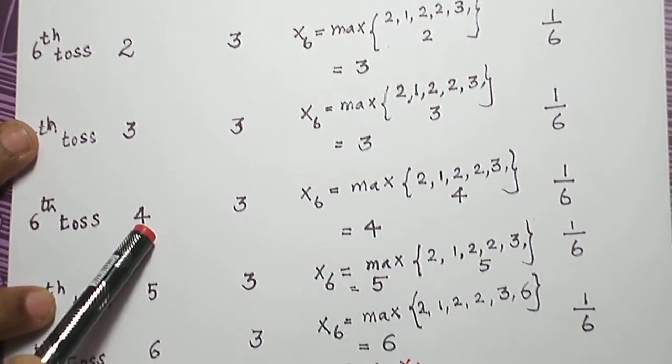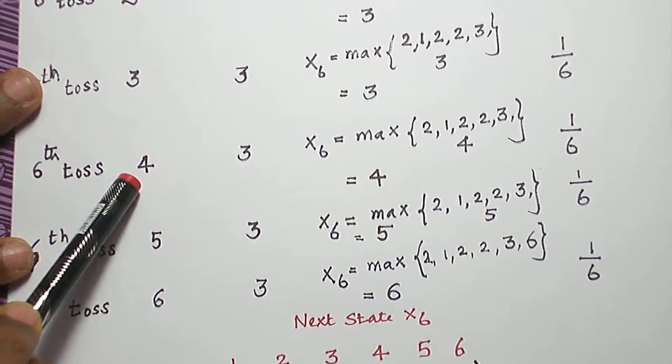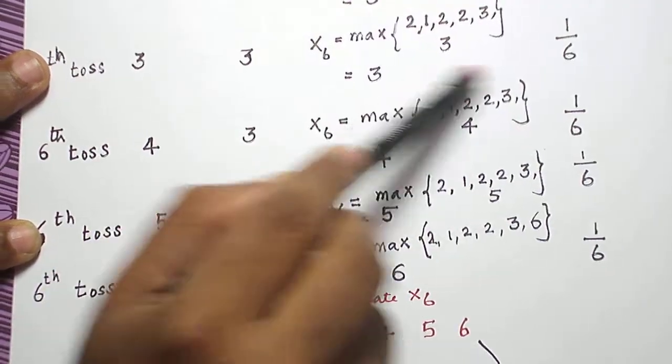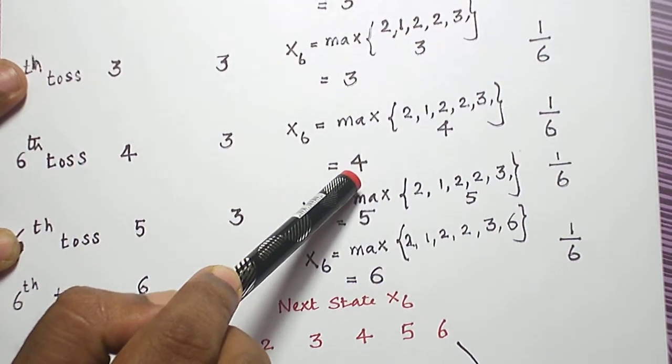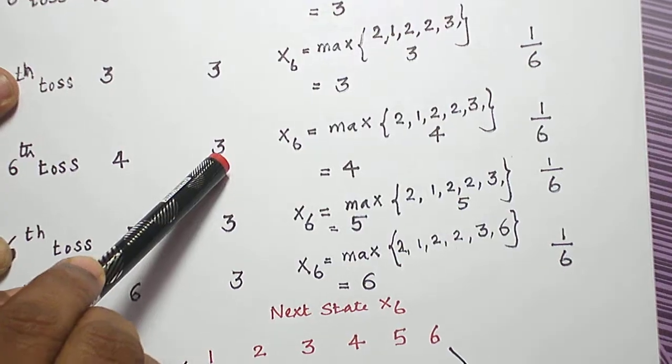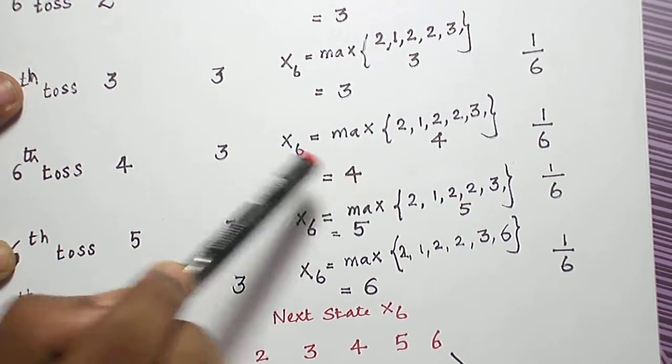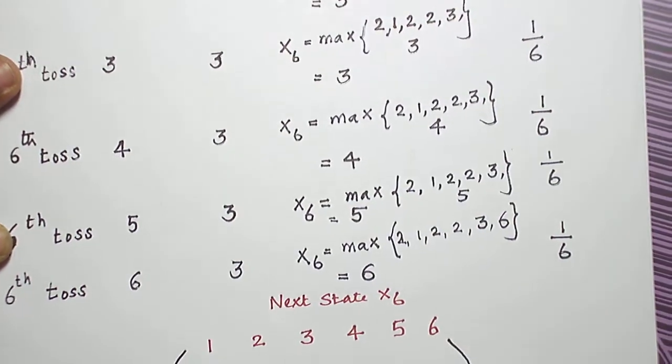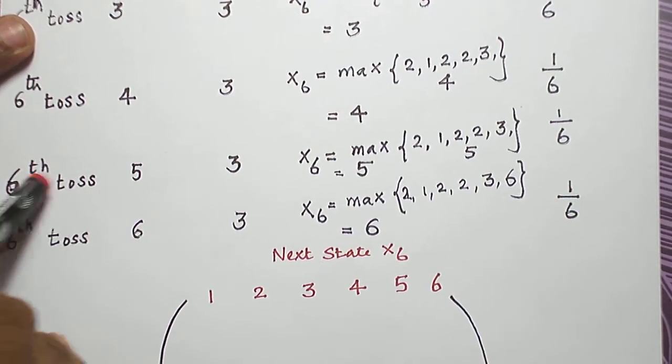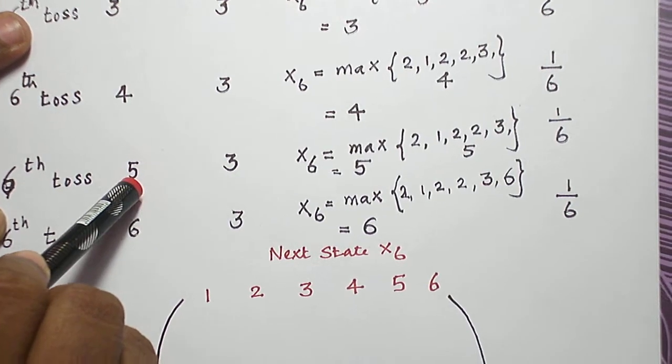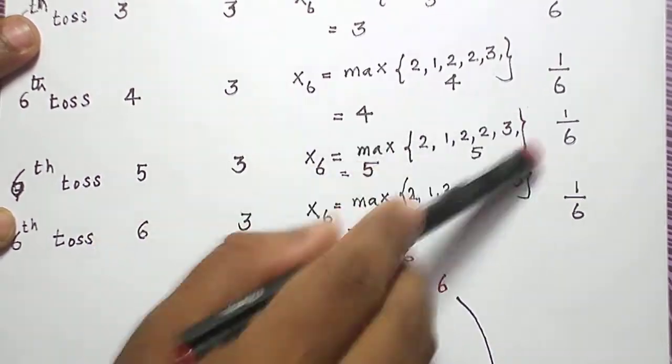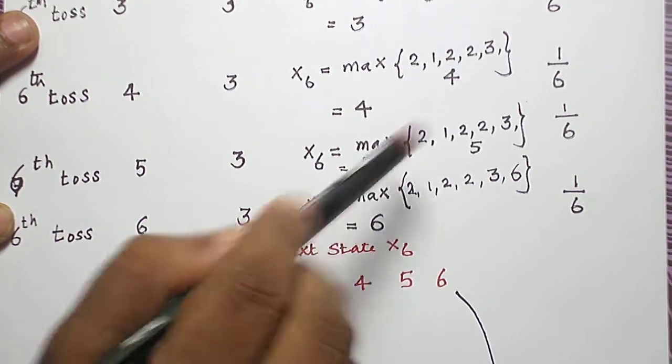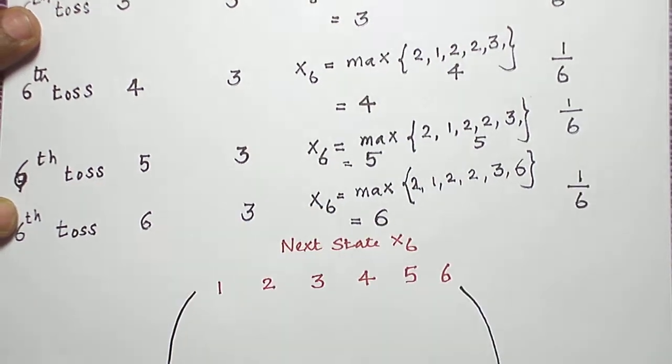But when I take number 4, if this is the outcome, 4 is included here. Now if you see the maximum, maximum is altered to number 4. So from state 3 to 4, it is moving. Probability of getting 4 is 1 by 6. Same can be explained. Suppose 6th toss is 5, then 5 is included. Maximum is 5. So from state 3 to state 5, it is moving. Probability is 1 by 6, like that for 6 also.